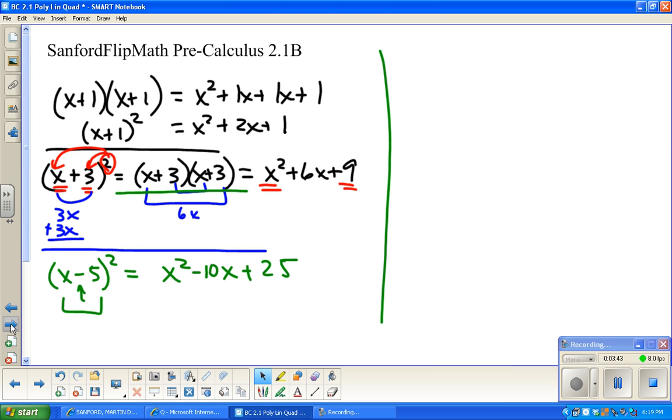What I want you to see here is look at this 2 and that 1, look at this 6 and that 9. Think about where they came from. This 2 came from 1 + 1, and 1 times 1 was that. This came from 3 + 3, and 3 times 3 gave us that 9. This came from negative 5 + negative 5, and negative 5 times negative 5 is 25.